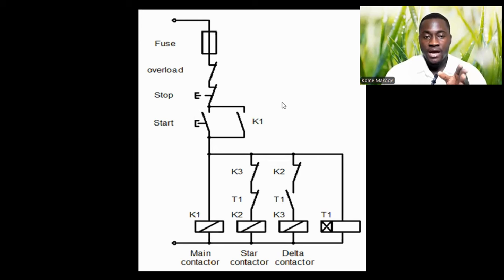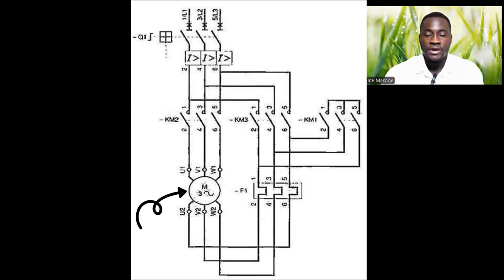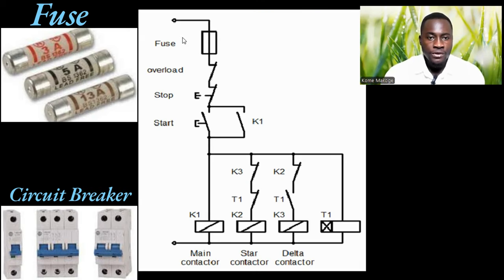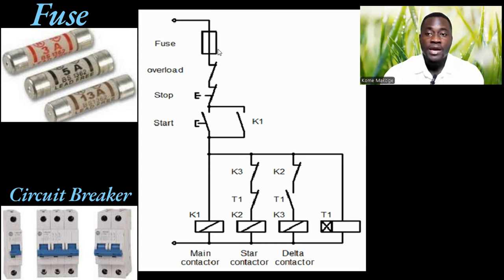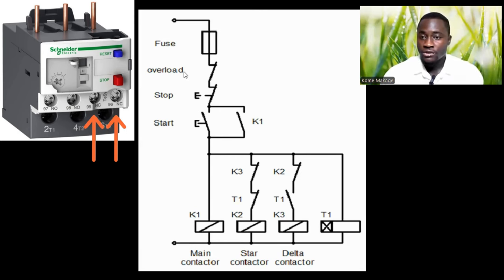We'll be focusing on the control circuit. When you understand how the control circuit functions, it will also help you understand how current is flowing from upstream going to the level of the electric motor and then the motor starts rotating. The first point here is the fuse — or in this case, we can also use a circuit breaker. Any circuit-protective device can be used in this location. Next we have a thermal relay, connecting to the normally closed contact of the thermal relay, which is also an overload protection relay.